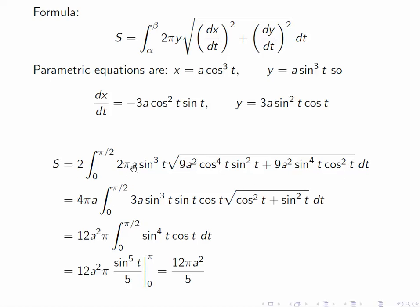And then let's pull the four pi a, the two pi a out the front to give us four pi a. And then we look inside the square root, and we see that there's a common factor of 9a squared cosine squared t sine squared t.